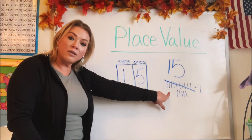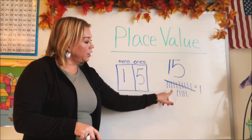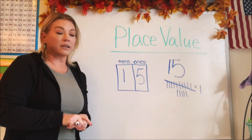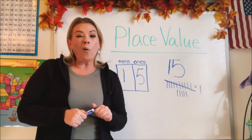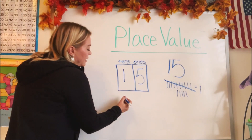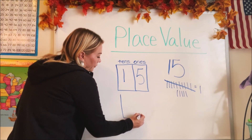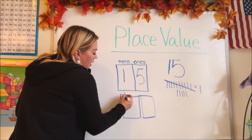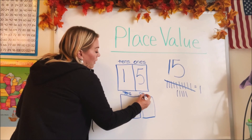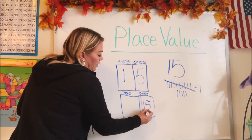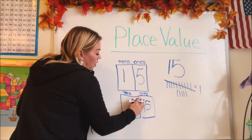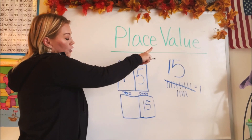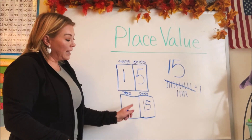Did you see how we do that? We marked out the number and then put it in groups of 10 so we knew how many goes in which box. When we do place value, we only count up to 10. So I wouldn't put 15 in the ones box — even though there are technically 15 ones if you count it that way. When we do place value, we only have up to 10, we count to 10.